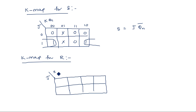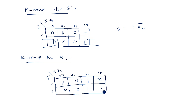For the K-map for R, using J, K, Qn as variables and filling in the R values from the conversion table, we group the 1s and don't cares where necessary. From this K-map, R = K·Qn. So S is obtained by ANDing J and Qn-bar, and R is obtained by ANDing K and Qn.